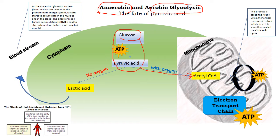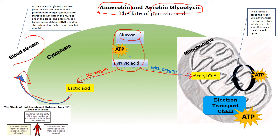However, if there's not enough oxygen present, then what happens is that pyruvic acid is converted — one of the byproducts is lactic acid. As the lactic acid in the muscles increases it can then spill out into the bloodstream. We always have a little bit of blood lactate in our bloodstream, but when it reaches four millimoles per litre, that's what we call the onset of blood lactate accumulation.